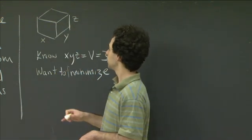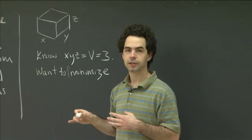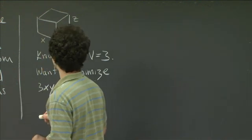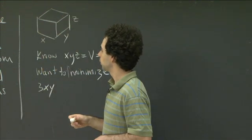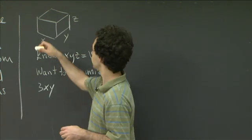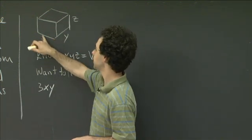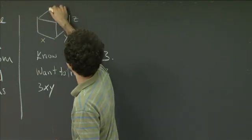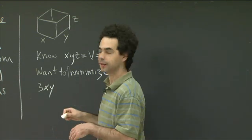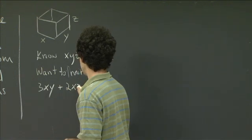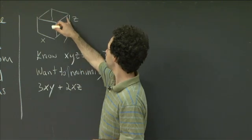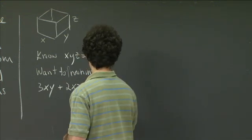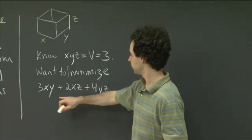Let's talk about how much cardboard is used. The bottom of the box is triple thick and has area x times y, so the total cardboard from the bottom is 3xy. The front and back are single thickness with area xz each, and there are two of them, contributing 2xz. The two sides each have area yz, there are two of them, and they're double thick, so that contributes 4yz. So the total amount of cardboard used is 3xy + 2xz + 4yz.